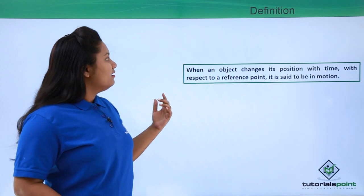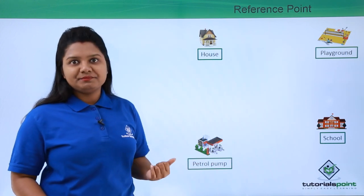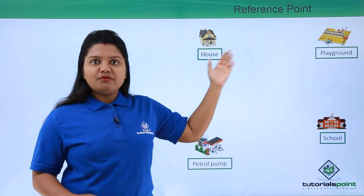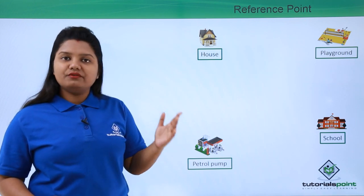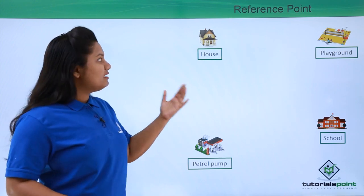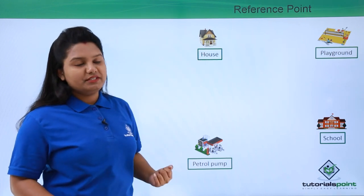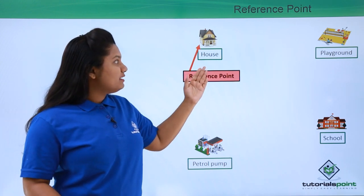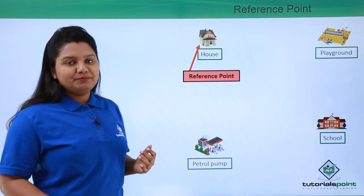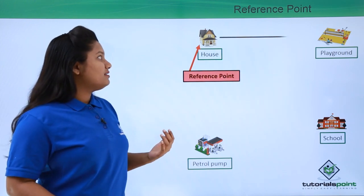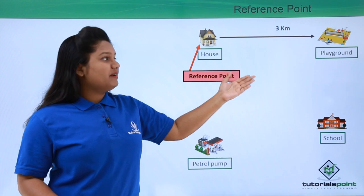Now let us consider four places: house, playground, school, and petrol pump. To specify the position of all these places we need a reference point, which can be any point. Let us first consider the house to be our reference point. With respect to the house, we can specify the position of the other three objects. For example, the playground is located three kilometers away from the house towards the east.